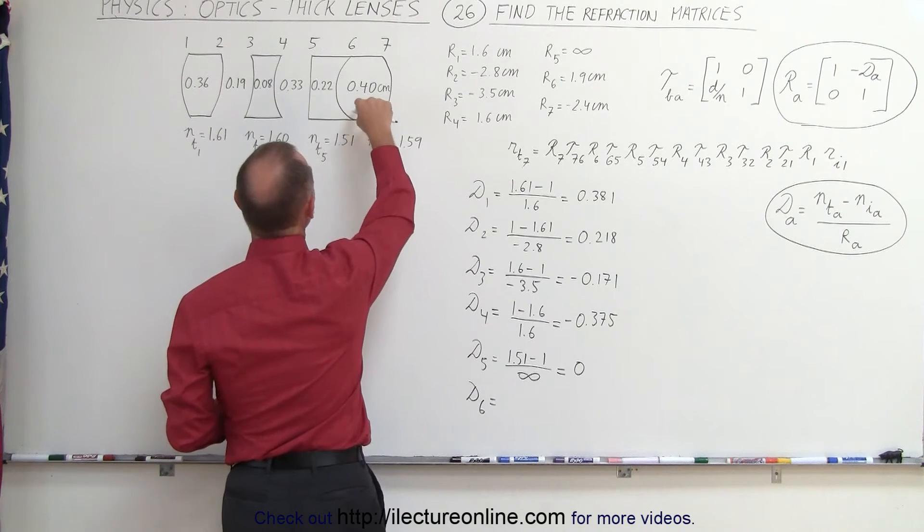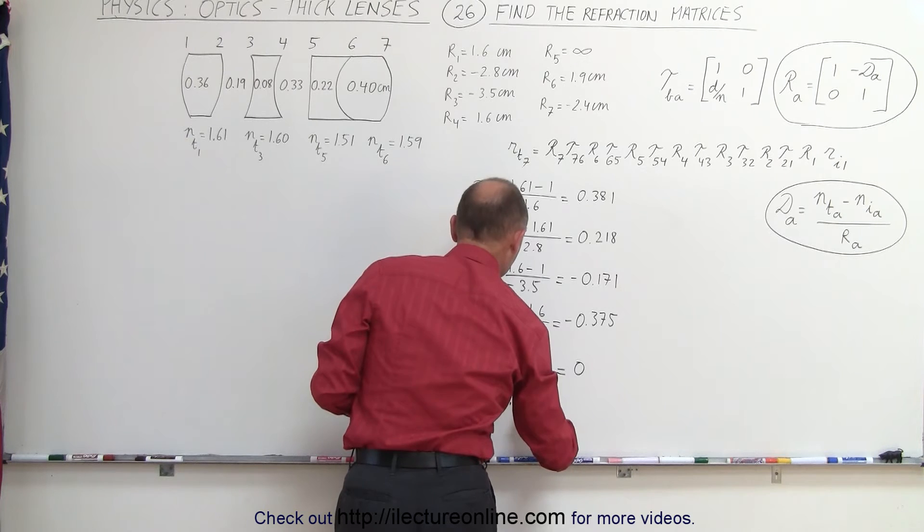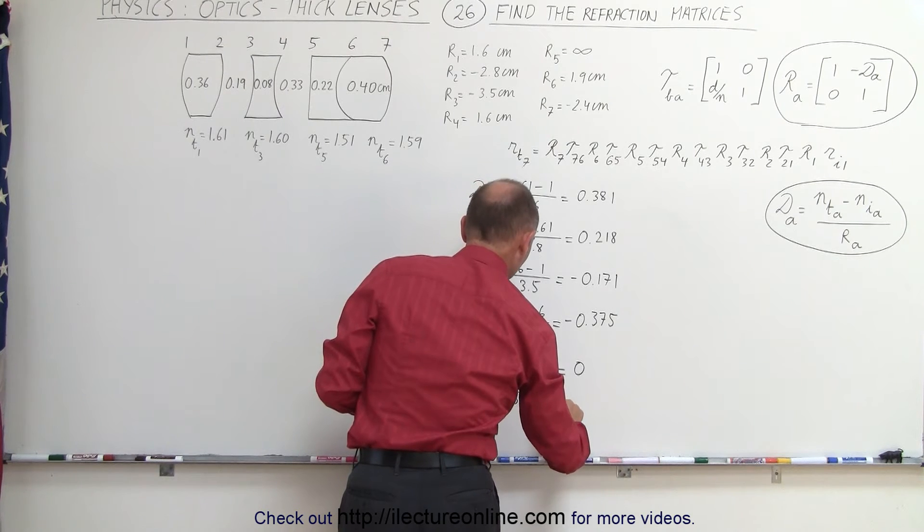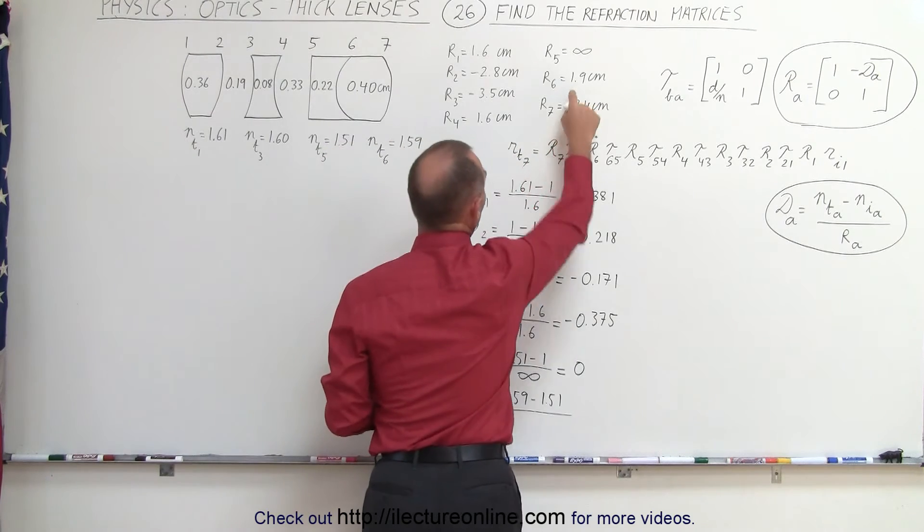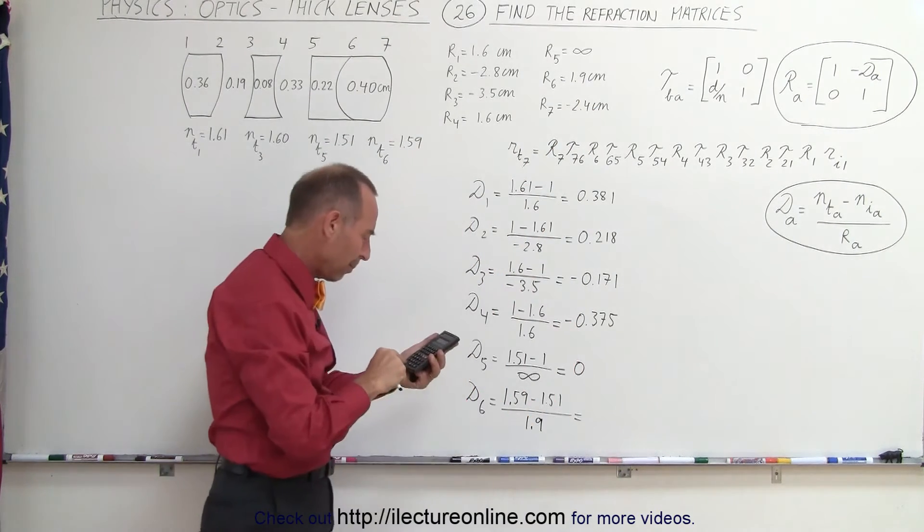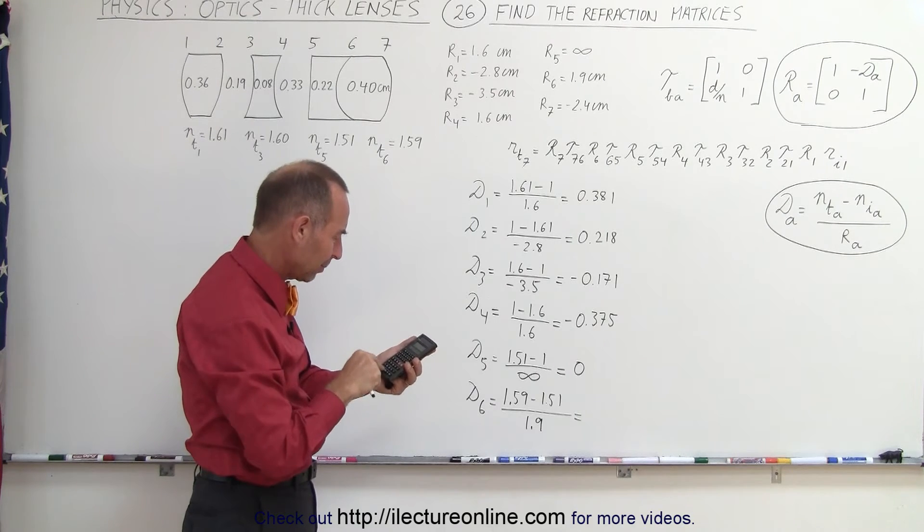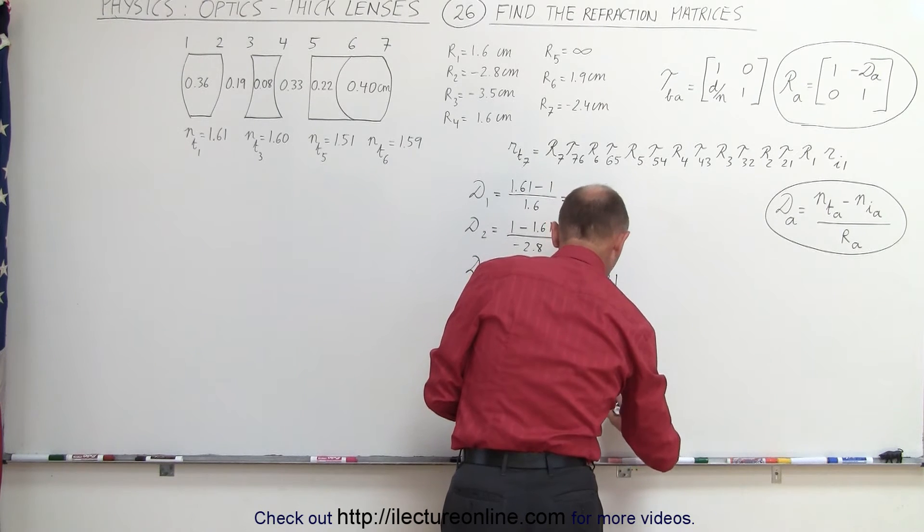That would be this index of refraction minus this index of refraction, so that's 1.59 minus 1.51 divided by radius of curvature, positive 1.9. So that would be 0.08 divided by 1.9 equals 0.042.